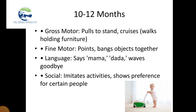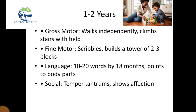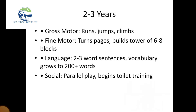Ten to twelve months through one to two years: social skills include imitating activities and showing preferences for certain people. Gross motor skills include walks independently and climbs stairs with help. Fine motor skills include scribbles and builds a tower of two to three blocks. Language skills include ten to twenty words by eighteen months and points to body parts. Social skills include temper tantrums and shows affection.